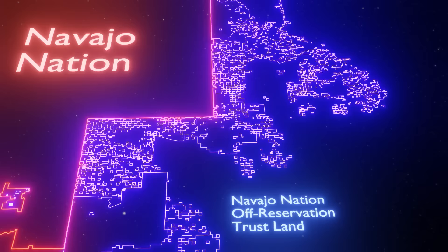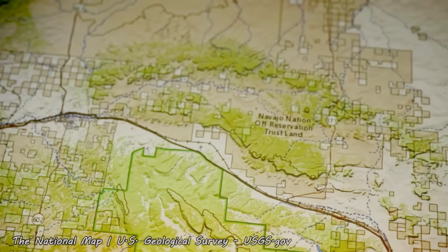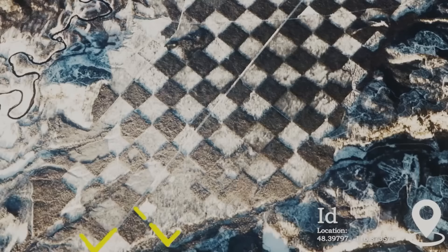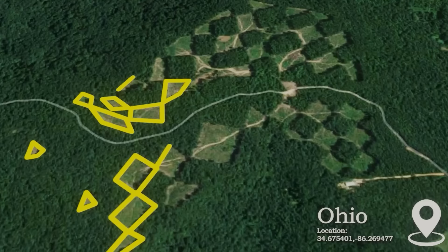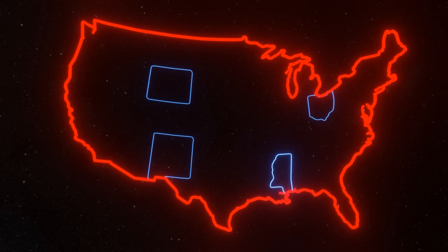This is a map of the Navajo Nation. But wait, look at this. You see these squares? They form a massive checkerboard of land almost 150 miles wide, unbeknownst to the entire world. And they're not alone. So what are these checkerboards? Why are they all over the United States? And why does no one know about them?